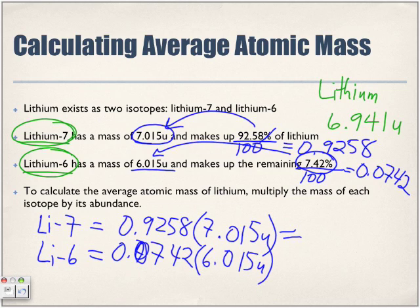All we're doing is we're trying to find a percentage of a number—the atomic mass of that isotope. We want to find 92.58% of this atomic mass, 7.42% of this atomic mass, and then we want to combine them.